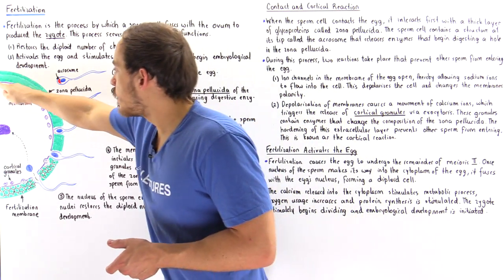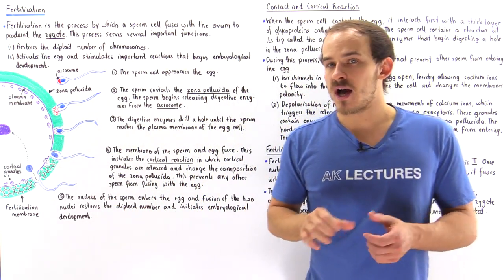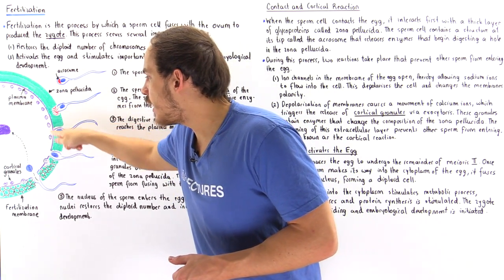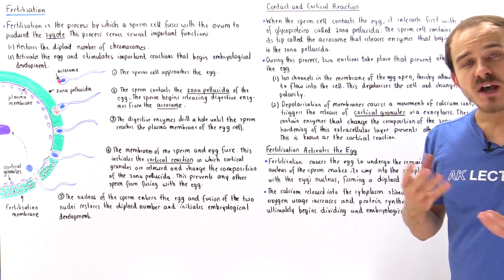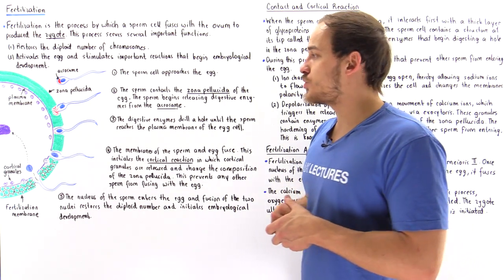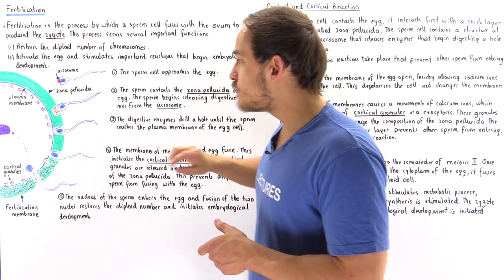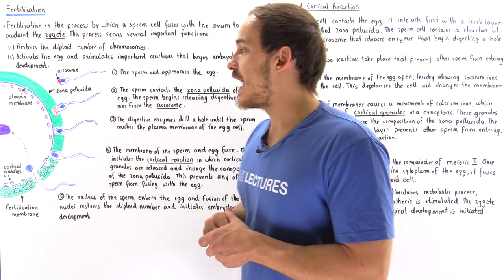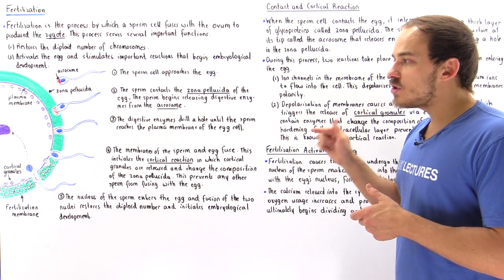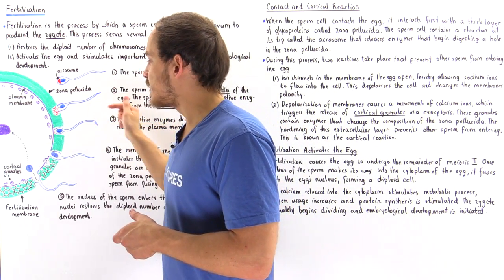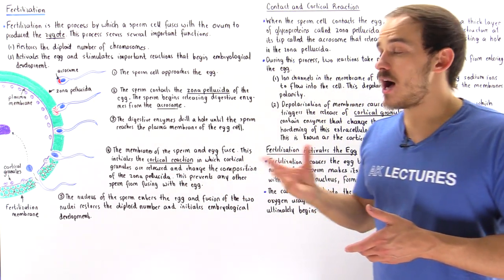First, the plasma membrane of the egg cell begins to depolarize because many ion channels along the plasma membrane begin to open up. For example, sodium ion channels open, allowing sodium ions to flow into the cell, which depolarizes the plasma membrane. Additionally, calcium ions also flow into the cytoplasm as a result of the opening of those ion channels.